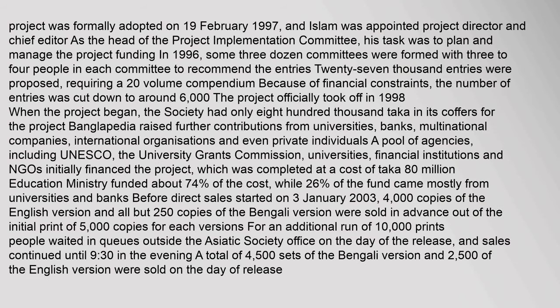The Banglopedia project was formally adopted on 19 February 1997, and Islam was appointed project director and chief editor. As head of the project implementation committee, his task was to plan and manage the project funding. In 1996, some three dozen committees were formed with three to four people each to recommend entries. 27,000 entries were proposed, requiring a 20-volume compendium, but due to financial constraints the number was cut down to around 6,000. The project officially took off in 1998, when the society had only 800,000 taka in its coffers.